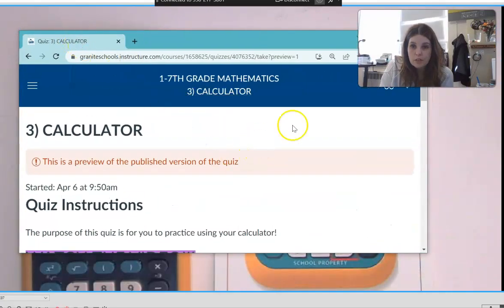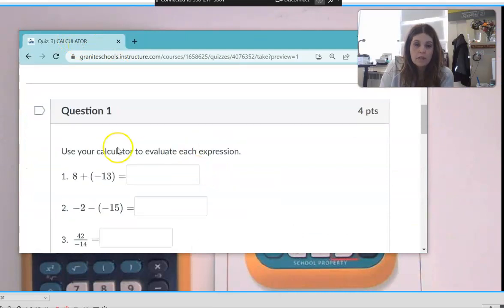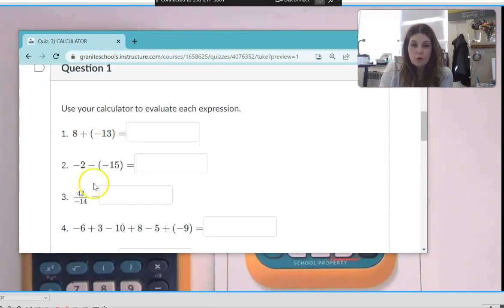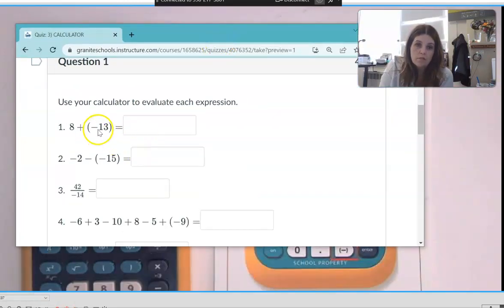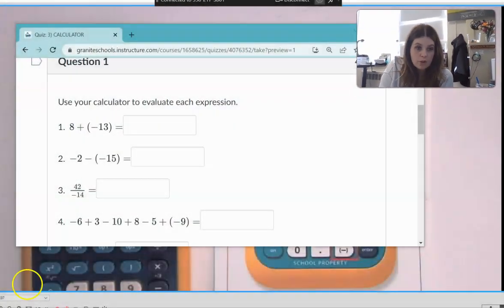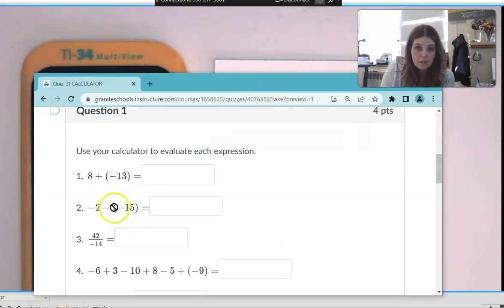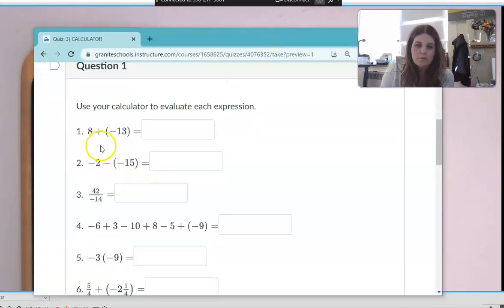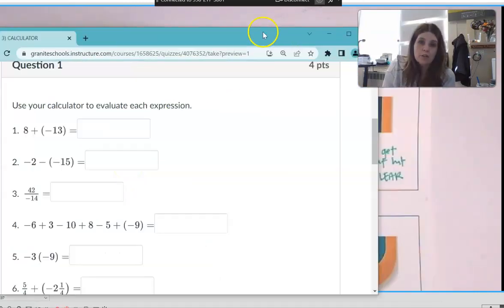These first few are having you work with integers and the key here when you're working with integers is that you need to make sure that you are putting in the negative when it is a negative. So right here on your screen where you're seeing this 13, this is a negative 13, it's not a minus 13. And in particular this problem here, this negative 2 minus a negative 15, you have to be careful about that.